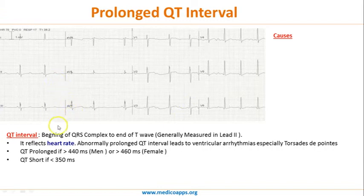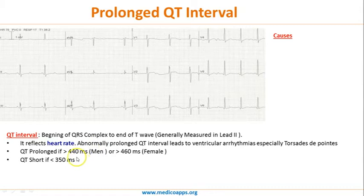The QT interval is measured from the beginning of the QRS complex to the end of the T wave, generally measured in lead V2. It reflects cardiac repolarization. An abnormally prolonged QT interval leads to ventricular arrhythmias, especially torsades de pointes.